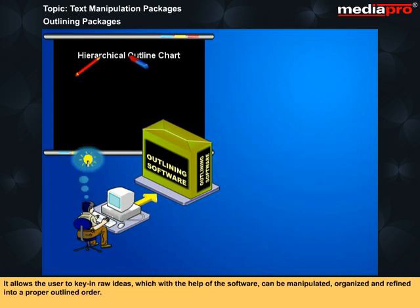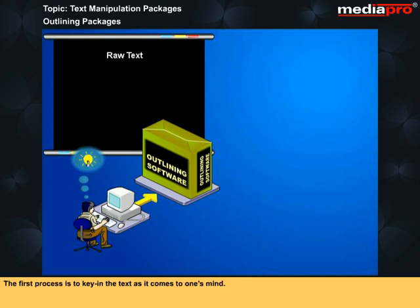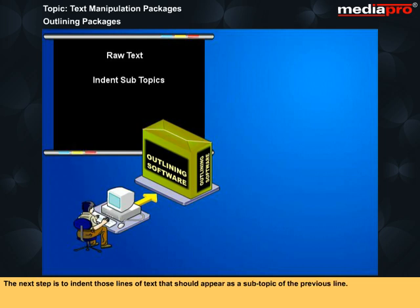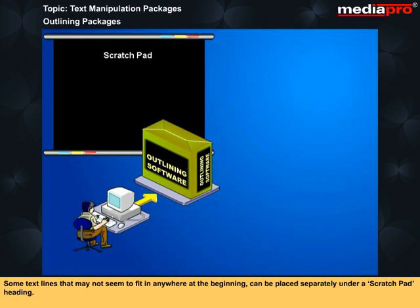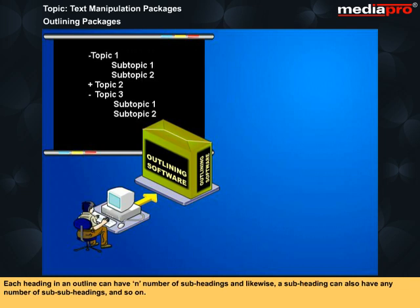It allows the user to key in raw ideas which, with the help of the software, can be manipulated, organized, and refined into a proper outlined order. The first process is to key in the text as it comes into one's mind. The next step is to indent those lines of text that should appear as a subtopic of the previous line. Some text lines that may not seem to fit anywhere can be placed separately under a scratchpad heading. Each heading in an outline can have any number of subheadings, and likewise, a subheading can also have any number of sub-subheadings and so on.